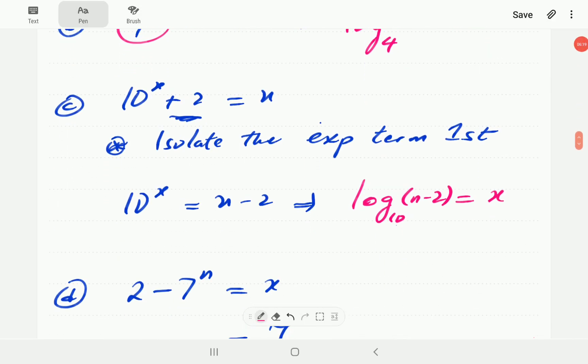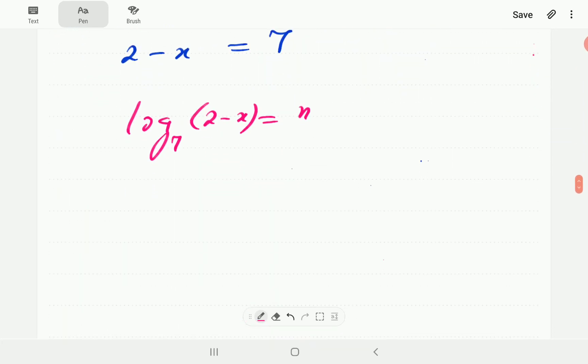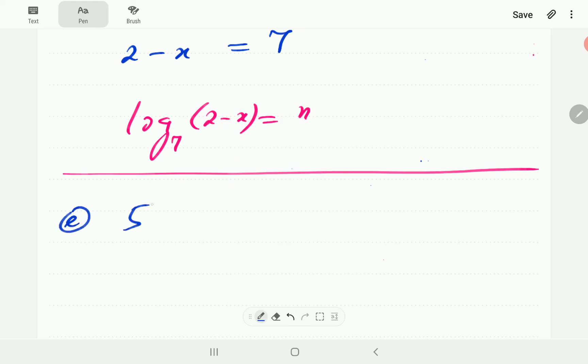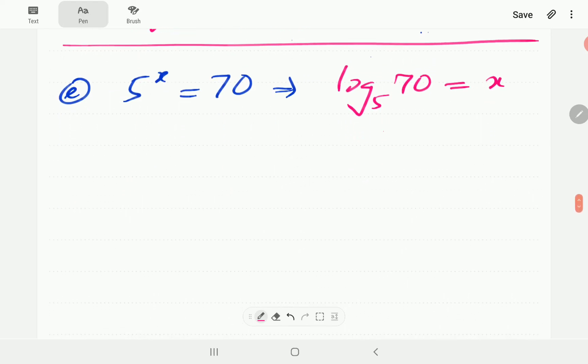For e, we have 5 to the power of x is equal to 70. We write this in log form. The base is 5, the exponent is x, so 70 is going to slot in there.